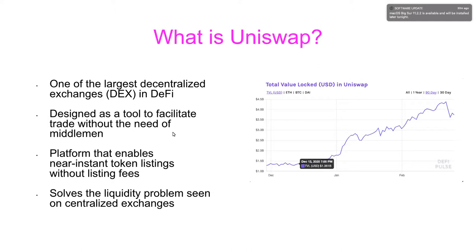Uniswap enables near-instant token listings without listing fees — centralized exchanges charge a lot just to get on their platform — and it solves the liquidity problem seen on centralized exchanges. If you're interested, check it out at uniswap.org. It's compatible with most wallets.